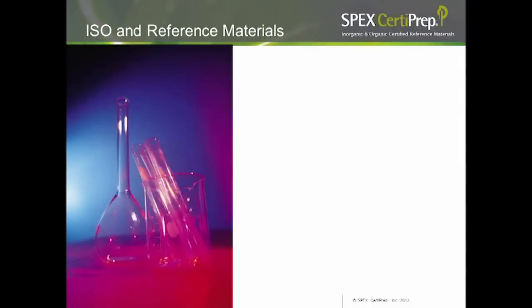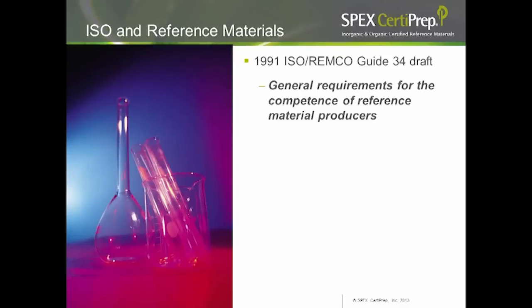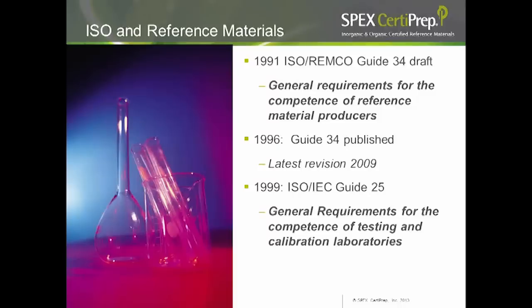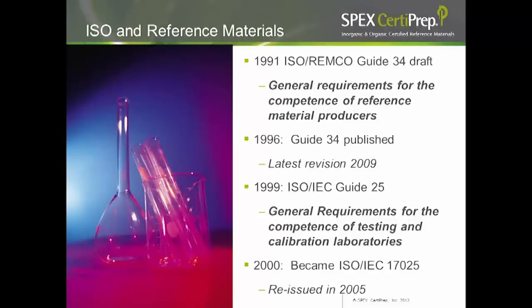When it comes to laboratories and reference materials, there are additional certifications and accreditations you can have. In 1991, ISO drafted Guide 34, which was meant for the requirements for certified reference material producers. It was then published in 1996, with the latest revision being the 2009 edition. In 1999, general and testing laboratories were covered under Guide 25, which later became 17.025 in the year 2000 and was reissued again in 2005.